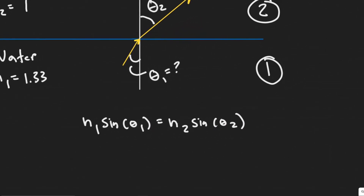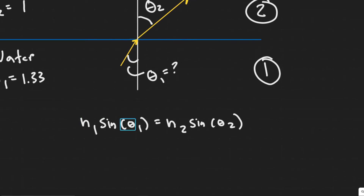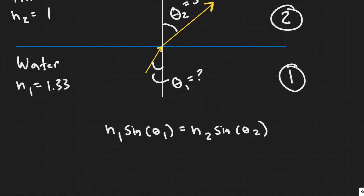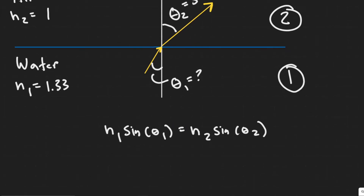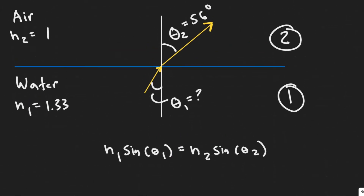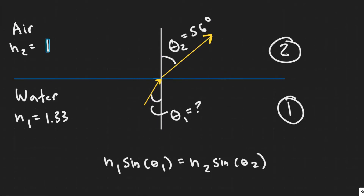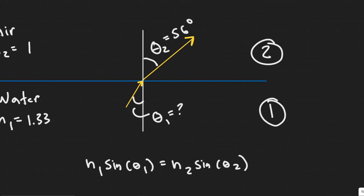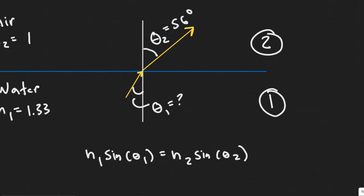We're solving for theta1, so we need n1, n2, and theta2. n1 is the index of refraction for the initial medium, which is water — we have that as 1.33. n2 is where it leaves, which is air — just 1. And theta2, the angle of refraction, is given as 56 degrees. So we just need to plug in and solve for theta1.